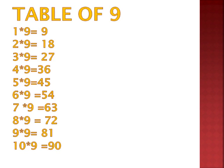Again from the beginning: 1 nine is 9, 2 nines are 18, 3 nines are 27, 4 nines are 36, 5 nines are 45, 6 nines are 54, 7 nines are 63, 8 nines are 72, 9 nines are 81, 10 nines are 90.